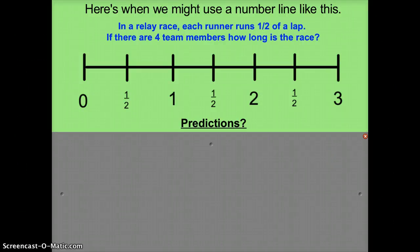In this video we are going to take a look at different kinds of number lines. So far we've only done number lines that go from 0 to 1 whole. We're going to see number lines here that go more than 1 whole — they go past 1 whole and have multiple whole numbers on them.